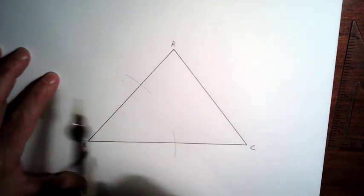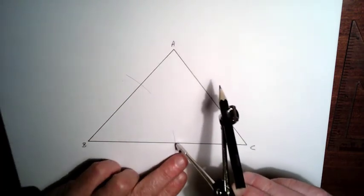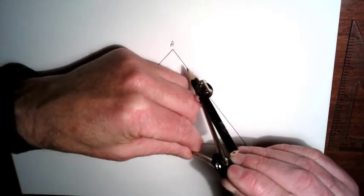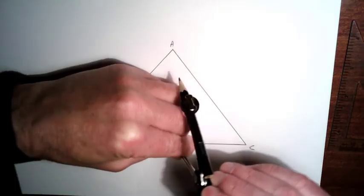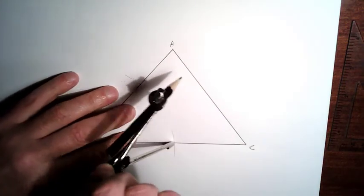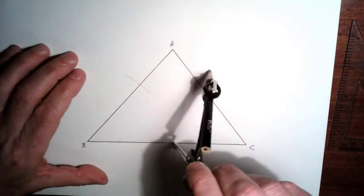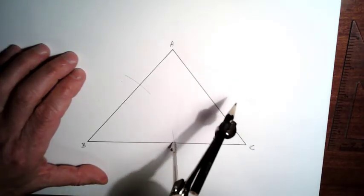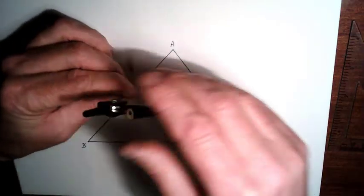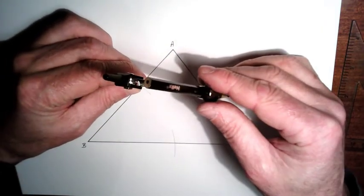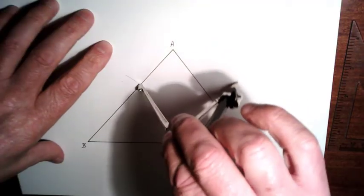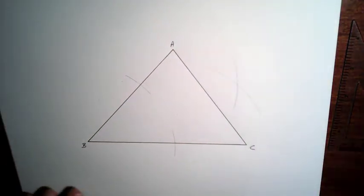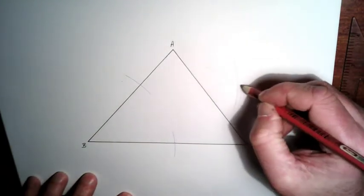Next thing you're going to do is take your compass and put it at the two points of intersection. We'll do this one here first. So I'm just going to put the compass here and draw an arc up here. Then bring the compass over to the other point of intersection here and draw another arc. So those two arcs should intersect, and they intersect here.